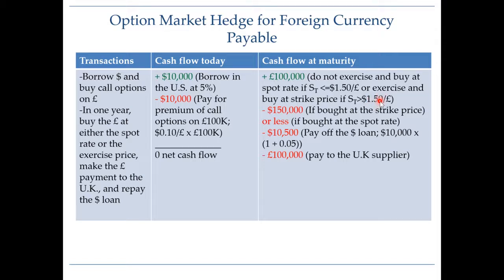This means the most we are going to spend is $150,000. If the future spot rate is greater than $1.50, we exercise the call option and pay $150,000 to purchase 100,000 pounds. If the future spot rate is lower, we buy pounds at the spot rate and the dollar amount needed will be less than $150,000. We also need to pay off our dollar loan — $10,000 borrowed at 5% will cost us $10,500.